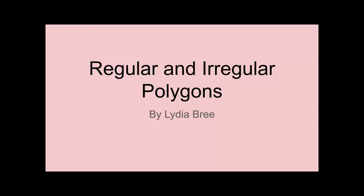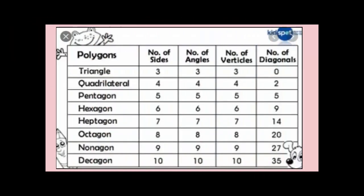We've been learning about polygons, and now we need to make a distinction between regular and irregular polygons. We know that polygons are named for the number of sides in each of the shapes. Triangles, of course, have three sides, and quadrilaterals have four sides.